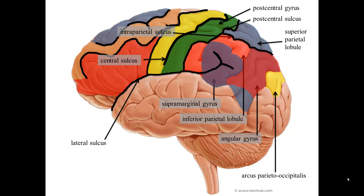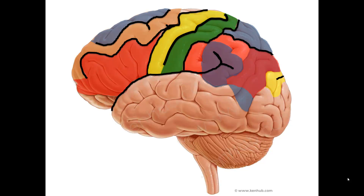The arcus parietal occipitalis surrounds the parietal occipital sulcus and is part of both the parietal and occipital lobes. Here is a look at the parietal lobe without labels.